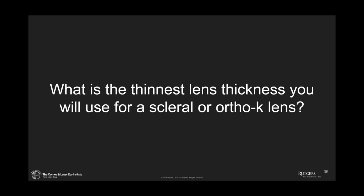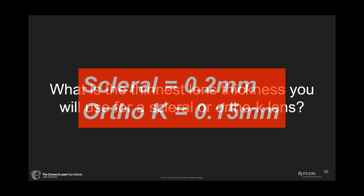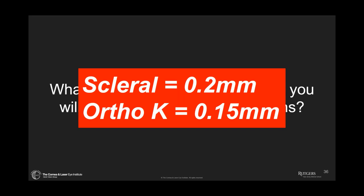In a Keratograph 5M, that's exactly how you would do it — the ideal instrument to be able to do this. What is the thinnest lens thickness you will use for a scleral and orthokeratology lens? The lowest I've ever gone is a 0.2-millimeter center thickness on a scleral lens — below that I had problems with breakage. I don't totally believe lens warpage is really a big problem in those lenses because you can create a thin center but then create a thicker mid-periphery, which acts as a kind of splint to hold that central area more stable. In orthokeratology, 1.5 mm — lenses thinner than that tend to have breakage during handling.